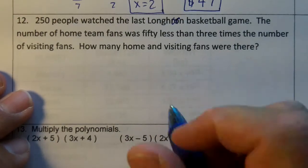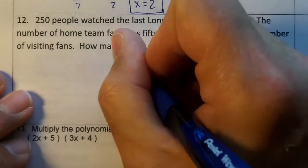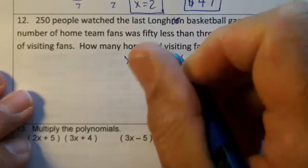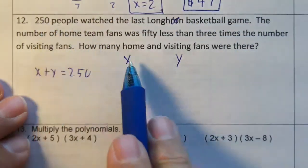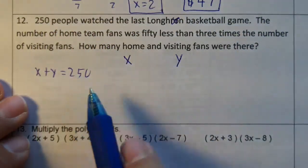This is a system of equations. We're going to let X equal home and Y equal visiting. So we know that X plus Y is equal to 250. There's 250 people there. If we add the home and visiting up, we'll get the 250.